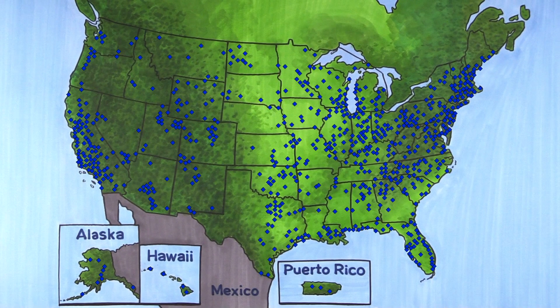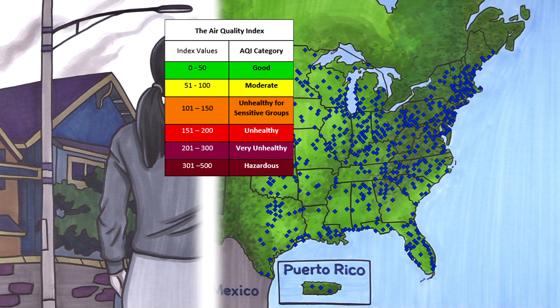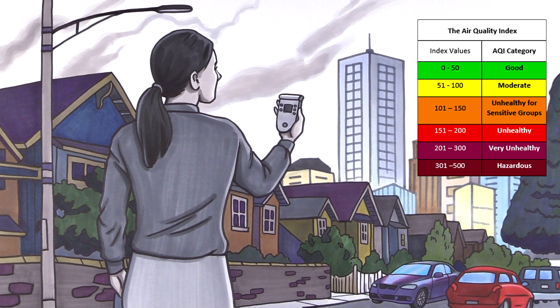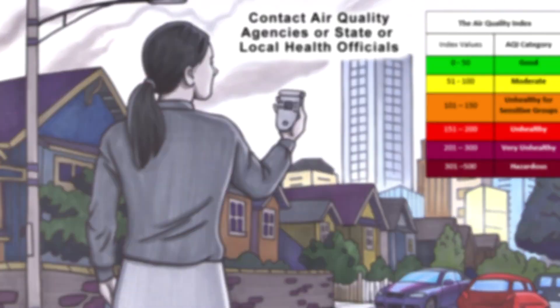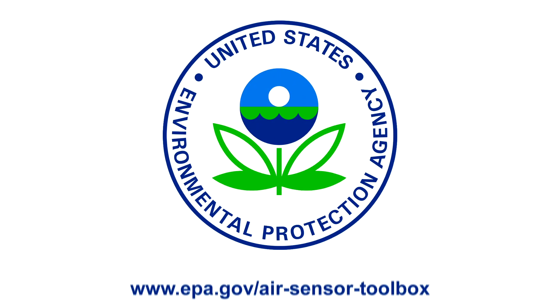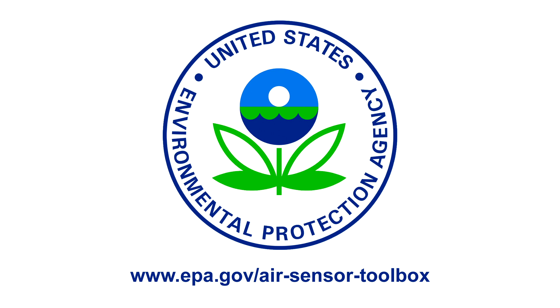Data of known quality comes from monitors operated by state, tribal, and federal agencies and from the AQI. Check the AQI to confirm your sensor readings and adjust your outdoor activities to avoid exposure. You can also contact your air quality agencies or state or local health officials for more information. To learn more about air sensors, visit epa.gov/air-sensor-toolbox.